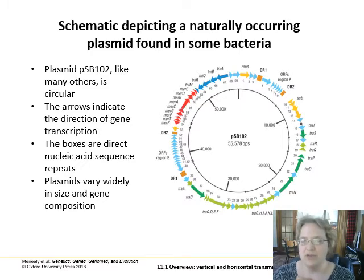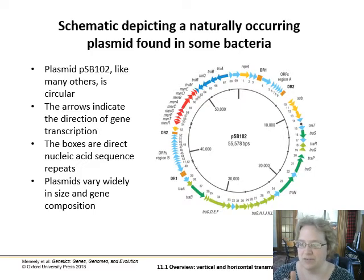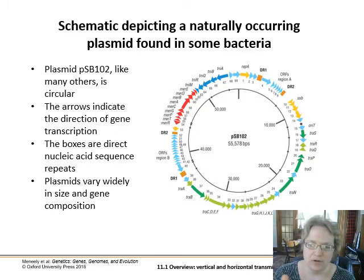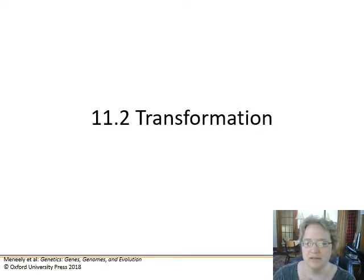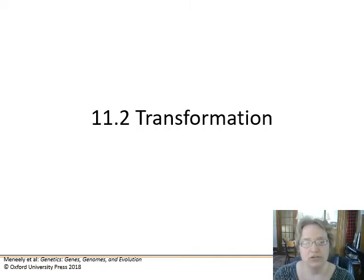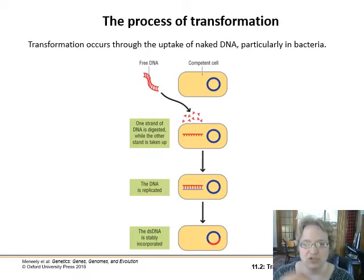Plasmids can be huge or they can be tiny; they vary a lot in size and what genes are on them. In this plasmid, the yellow indicates sequences for self-replication and the red arrows are for mercury resistance — so this plasmid confers the ability to thrive in an environment heavily contaminated with mercury. Our first method of horizontal gene transfer is called transformation, which is when bacterial cells take up DNA that's in the environment. Bacteria are particularly good at this.